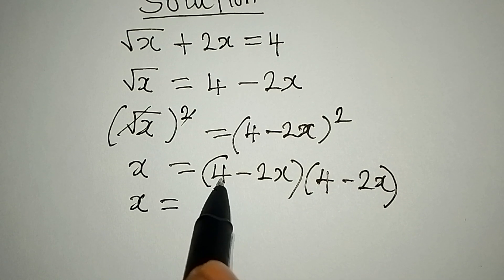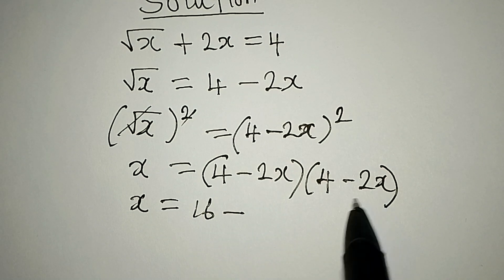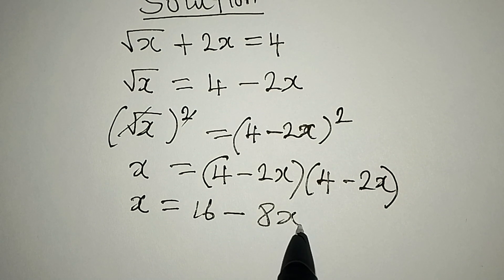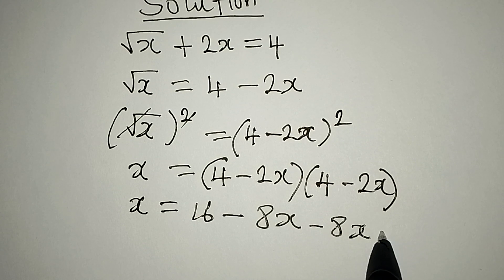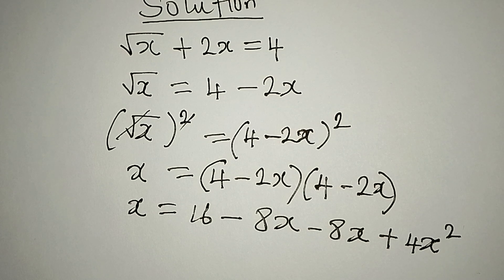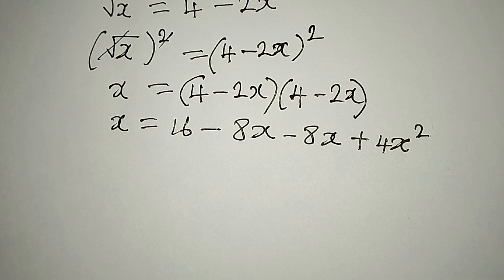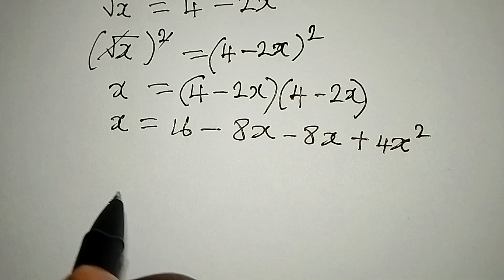Now we have x equal to 4 times 4 is 16, minus 4 times 2x that would be 8x, minus 2x times 4 that is minus 8x, then plus 4x squared. How did I get the x squared? Negative 2x times negative 2x is plus 4x squared.